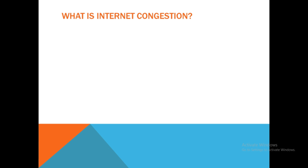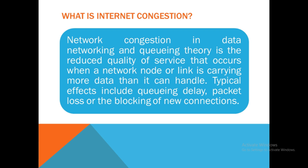Just like road congestion, network congestion occurs when a network fails to handle traffic adequately and efficiently. Network congestion in data networking and queuing theory is the reduced quality of service that occurs when a network node or link is carrying more data than it can handle. Typical effects include queuing delay, packet loss, or the blocking of new connections.